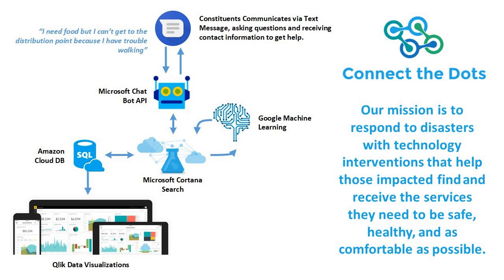They're using the Microsoft Chatbot API, which gives access to natural language processing so it can have a conversation with the person and ask for more information if necessary. That Microsoft Chatbot API is talking to Microsoft Cortana Search, which is talking to an Amazon database where Connecting the Dots stores all the different services available. The search says: this person asked for a pillow, I asked their address, pillow is near that address, here's the result. They're also using Google Machine Learning to monitor the query — checking the next day whether the person got what they needed, and that feedback goes into the machine learning algorithm, educating Cortana Search to give better answers next time. And they're using Qlik, a data visualization application, to create a dashboard presenting demand data to the community.